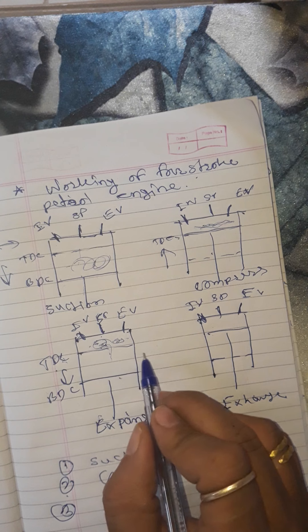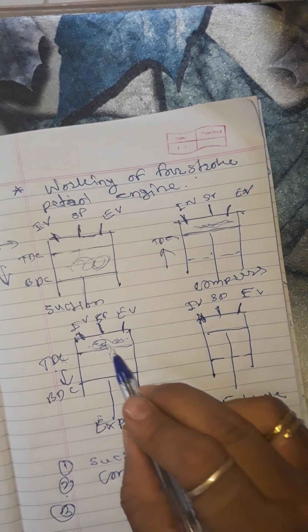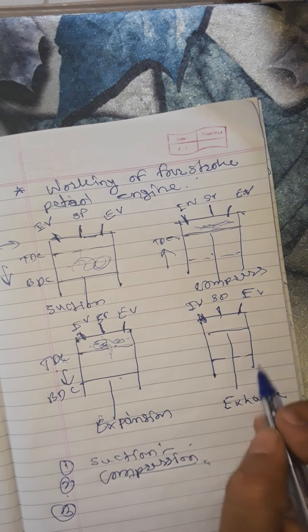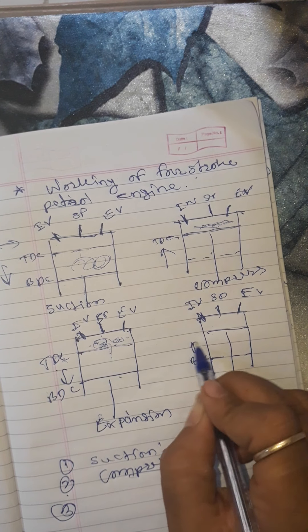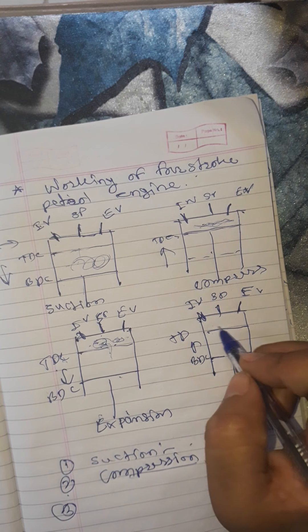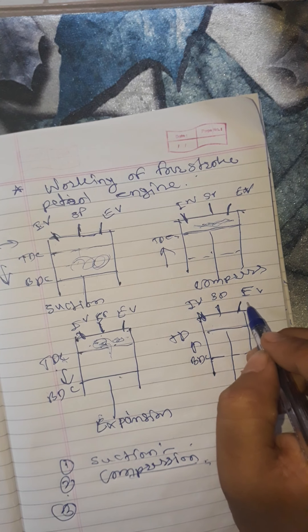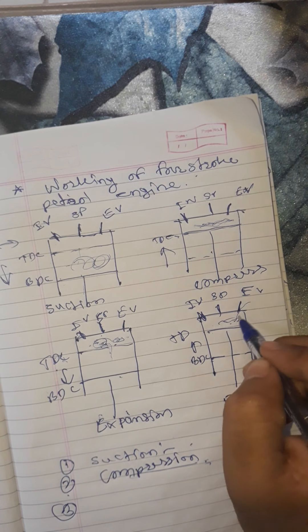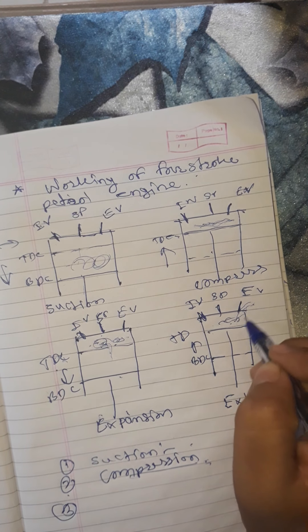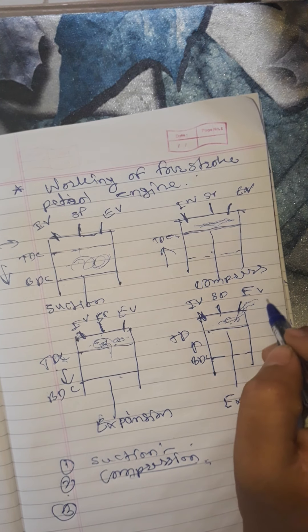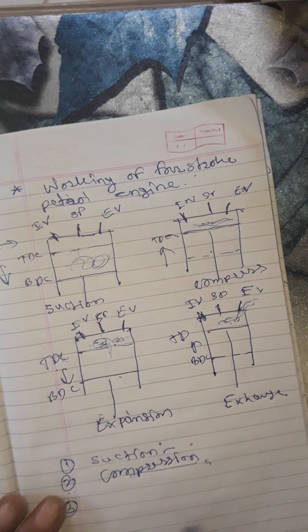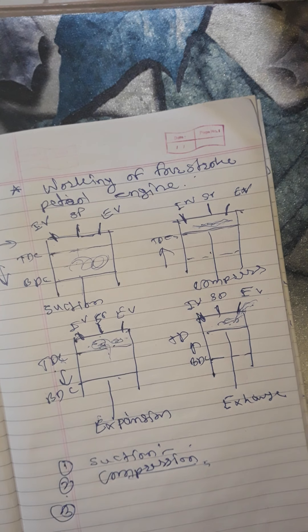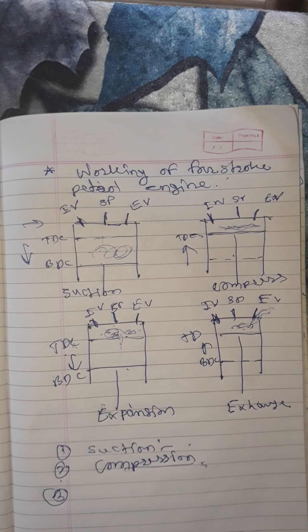Fourth stroke — exhaust stroke: after burning of the fuel, impurities remain in the combustion chamber. The piston moves from BDC to TDC. At this time, the inlet valve is closed and the exhaust valve opens, so all the burnt gases and impurities are removed through the exhaust valve. This completes the working of the four-stroke petrol engine.